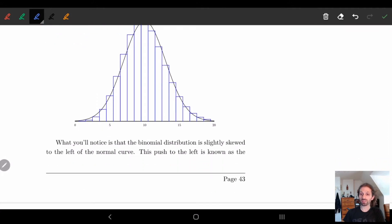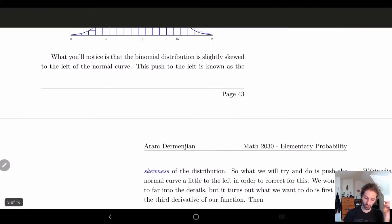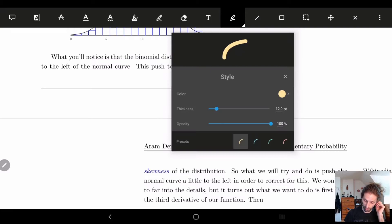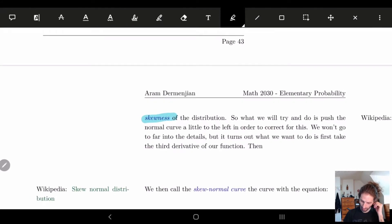And so this little push that's happening here is actually known as skewness. It's skewed a little bit to one direction, and this is known as the skewness of the distribution.